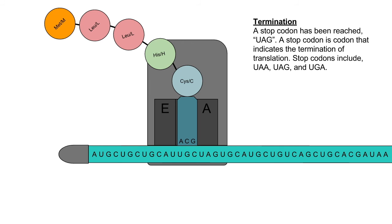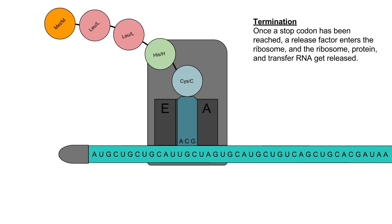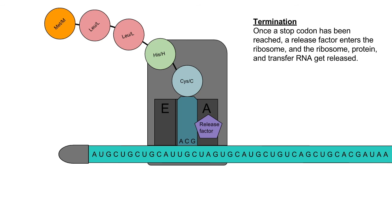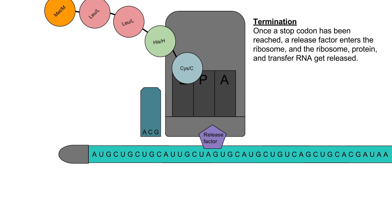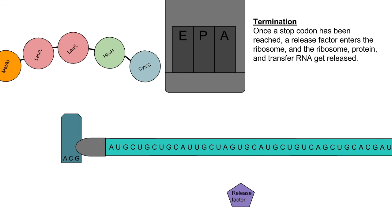A stop codon, UAG, has been reached. A stop codon indicates the termination of translation. Other stop codons include UAA and UGA. When a stop codon has been reached, a release factor enters the ribosome, and the ribosome, protein, and transfer RNA get released.